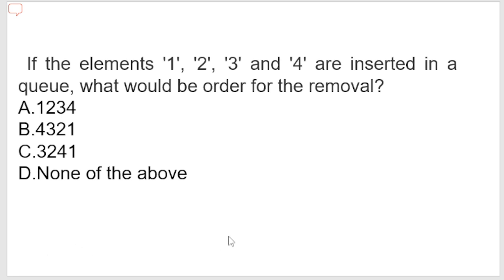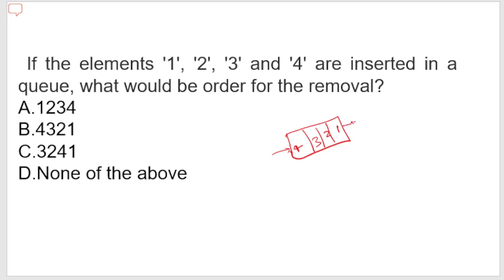Next: if elements 1, 2, 3, 4 are inserted in a queue, what would be the order of removal? We have seen a similar question for the stack. Queue uses FIFO — what comes first goes out first. So the removal order is 1, 2, 3, 4. The correct option is A.